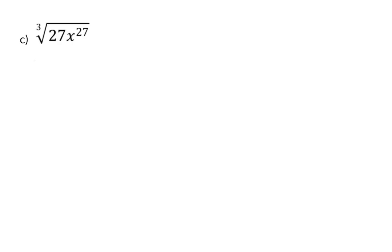In C we now need to determine the cube root. For the constant value of 27 we already know that the cube root is 3. For the variables, when determining the cube root, simply take the exponent and divide by 3, because in reality we are forming three identical factors. So we take the exponent of x to the power of 27 and divide by 3 to get x to the power of 9.